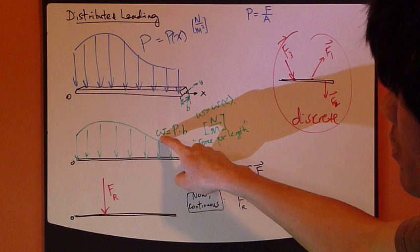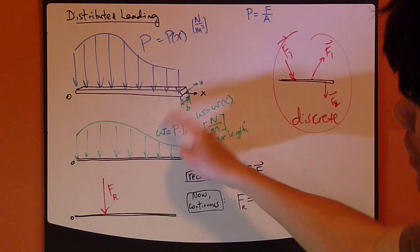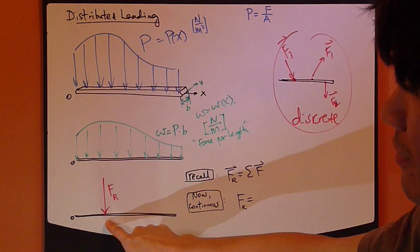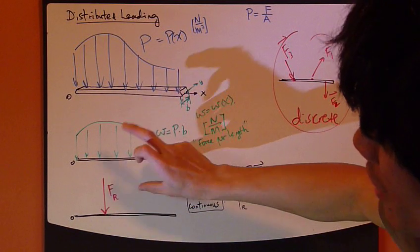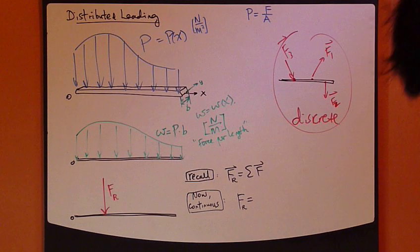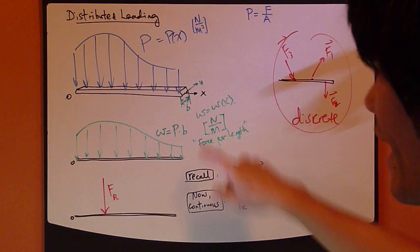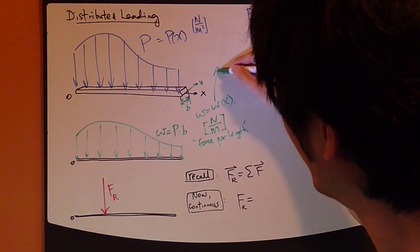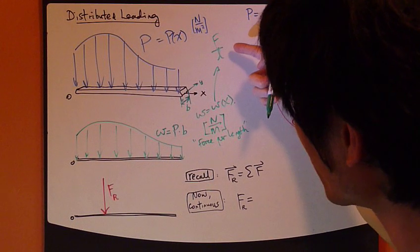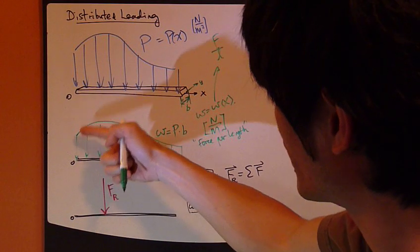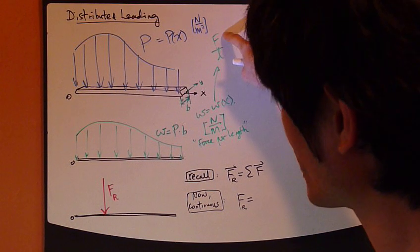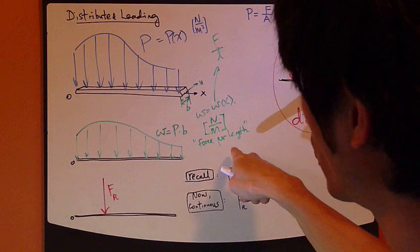So, now, to go from w, that is force per length, to a force, resultant force, apply at some point, so that these two pictures are equivalent, then we need to do an integration. Now, this is force per length, right. So, this is like f per L, right. Except now, this force right here, force at every point, it's different. It's not a constant, right. So this is changing. Now, length is the x coordinate.